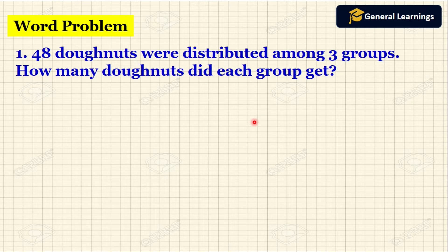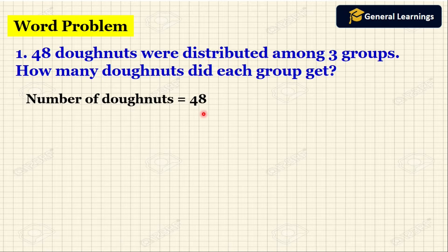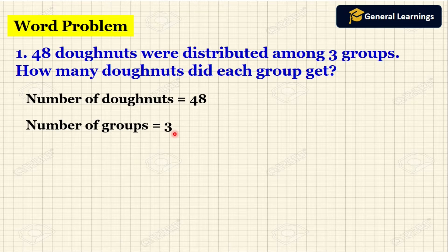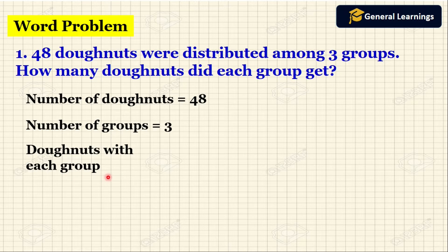First we need to write the statement. 48 donuts were distributed, so the total number of donuts is 48. It is distributed among 3 groups, so the number of groups is 3. Now we are going to find how many donuts each group got. For that we are going to find the division: 48 divided by 3.